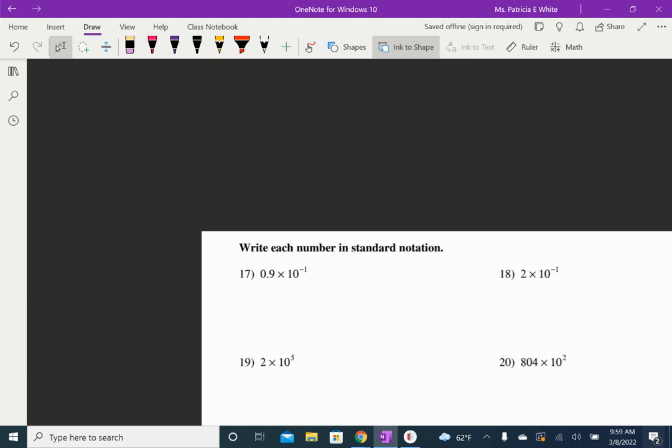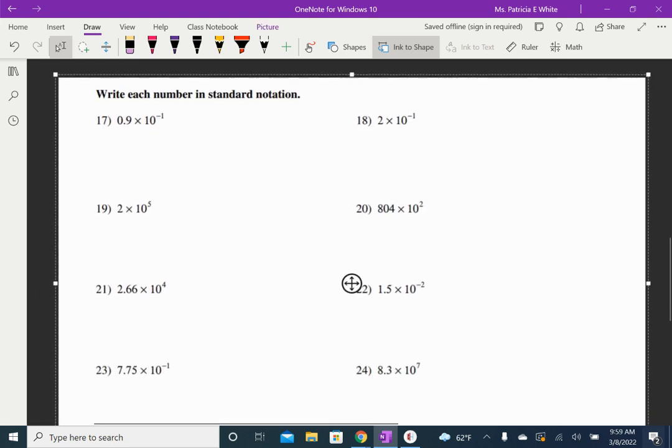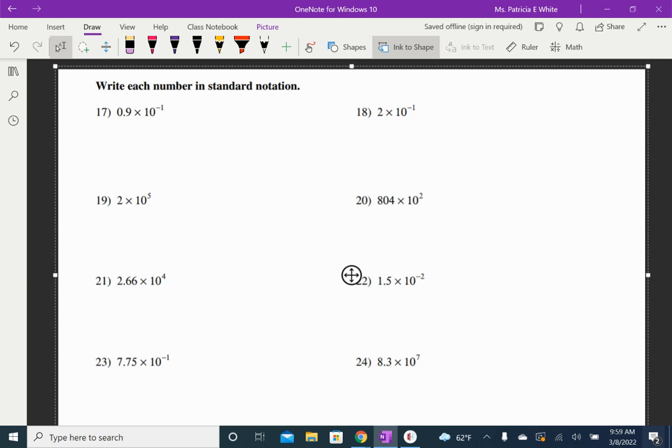I'm going to go down to 17. So these are in scientific notation, and I need to write them in standard form. So if I've made that negative, that's a really small number, but it's negative, so it's got to go, so 0.09.